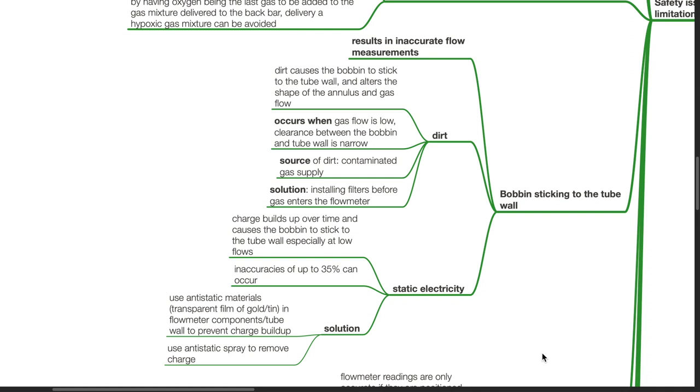Clearance between the bobbin and tube wall is narrow. The source of dirt is contaminated gas supply. Installing filters before gas enters the flow meter.